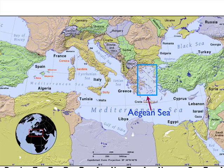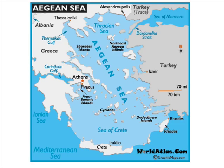Here, we put a blue box around the Aegean Sea on a map of the Mediterranean Sea. What's inside that blue box is the Aegean Sea. Now let's move in a little closer, and you can see that the Aegean Sea is sort of surrounded in many ways.